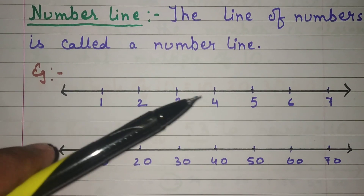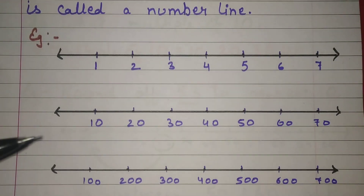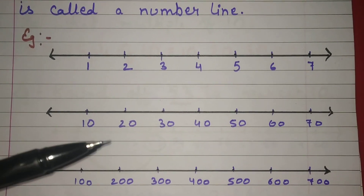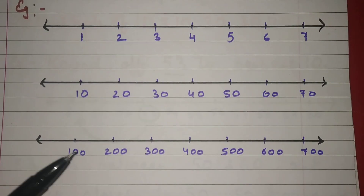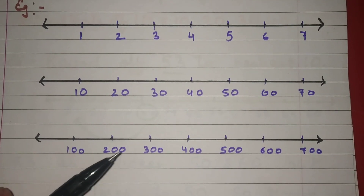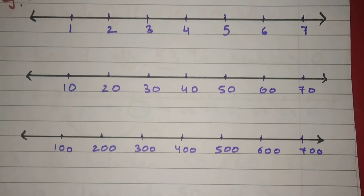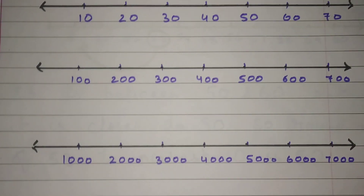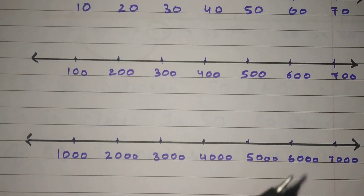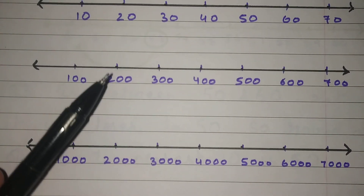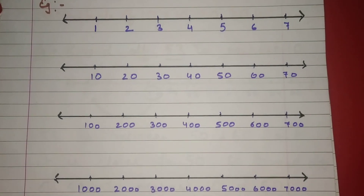For example, a number line can show 1, 2, 3, 4, 5, 6, 7. Another example with multiples of 10: 10, 20, 30, 40, 50, 60, 70. With multiples of 100: 100, 200, 300, 400, 500, 600, 700. And with multiples of 1000: 1000, 2000, 3000, 4000, 5000, 6000, 7000. These are all examples of a number line.